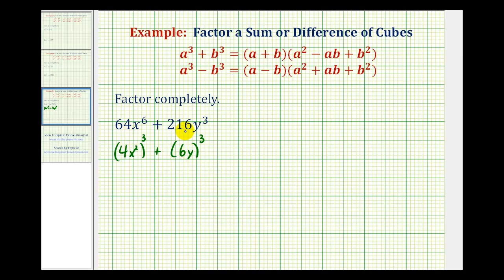So we're going to start by factoring out the greatest common factor of 64 and 216 from our binomial, which is not an easy question. To do this, we're going to find the prime factorization of 64 and 216.